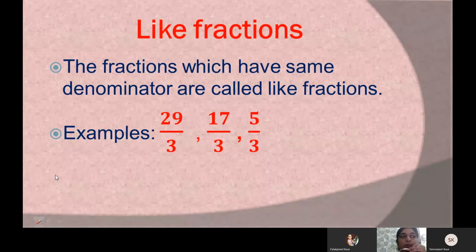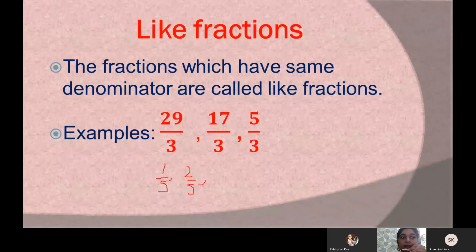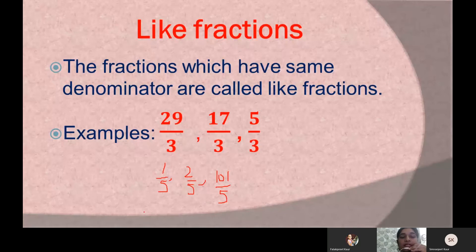We can have some more examples of like fractions. Let us take the fractions 1 by 5, 2 by 5, and 101 by 5. These three fractions are also called like fractions because in each fraction we have 5 in the denominator.